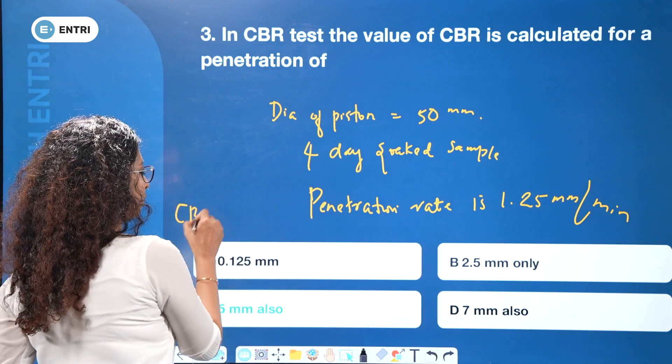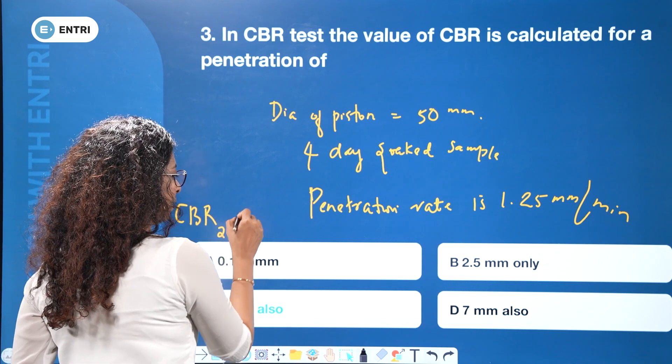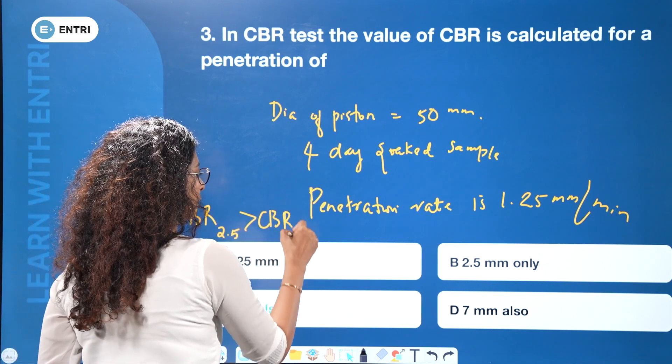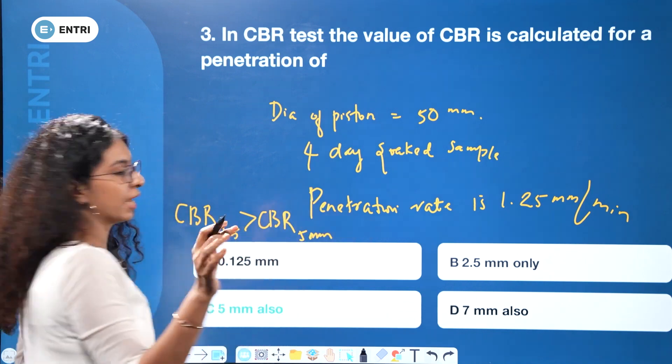If CBR at 2.5 mm penetration is greater than CBR at 5 mm penetration, that result is taken as the final CBR value.